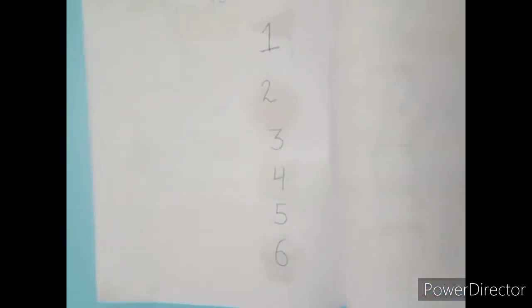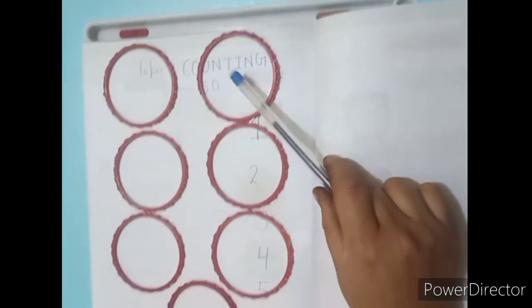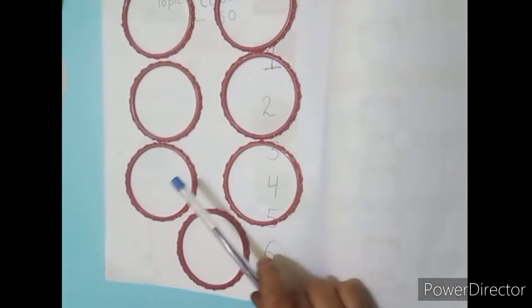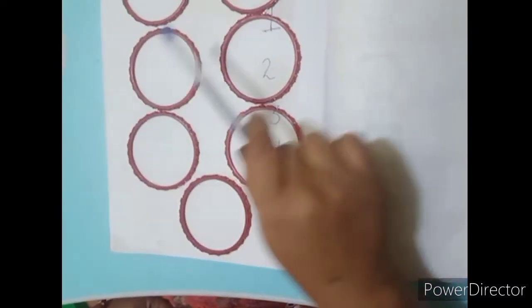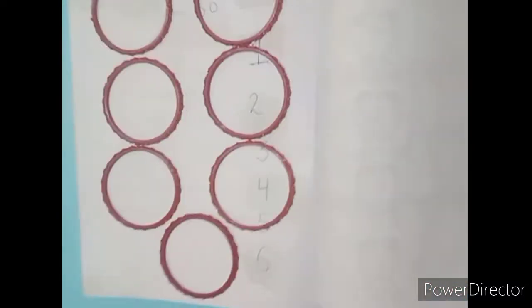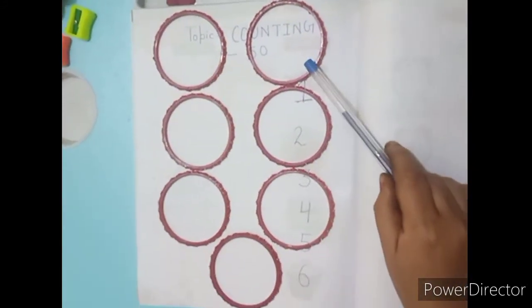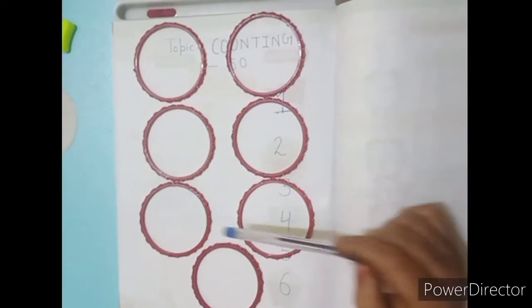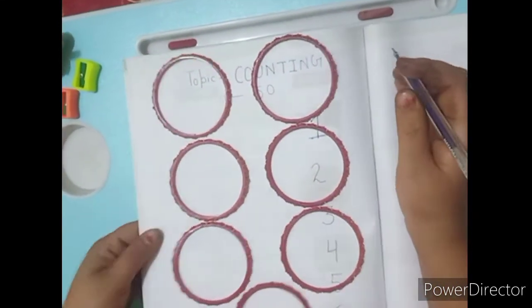Count: one, two, three, four, five, six, seven. How many pencils are here? Seven. Look here again and count it: one, two, three, four, five, six, seven. Now write the number seven.